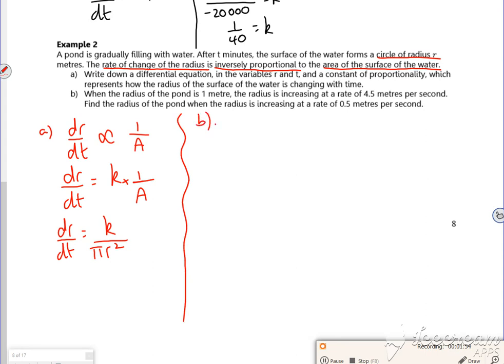Well, let's have a look at B then. So it says when the radius of the pond is 1 meter, the radius is increasing at a rate of 4.5 meters per second. So I know that when R is 1, DR by DT is 4.5.